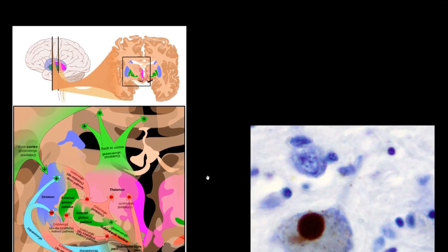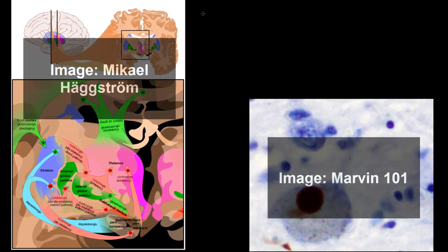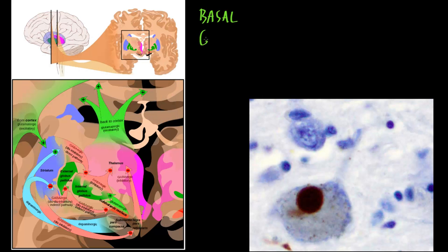The substantia nigra is one part of a collection of structures called the basal ganglia. Here in this illustration, if we take the brain and section it from top to bottom and look deep inside the cerebrum, all the colored areas represent this collection of structures called the basal ganglia, of which the substantia nigra is one part. The basal ganglia plays a major role in motor functions as well as some mental functions.